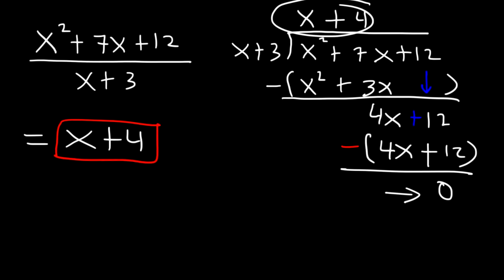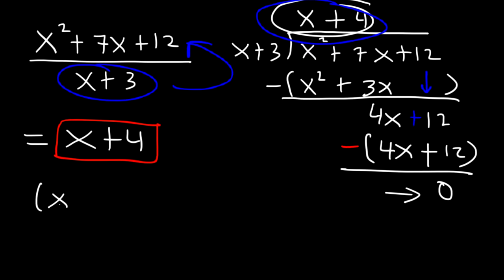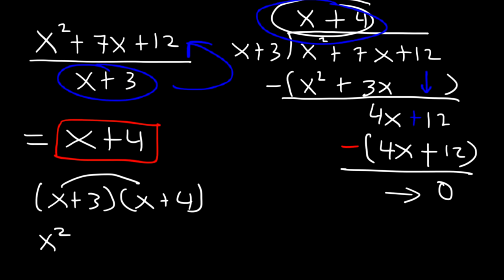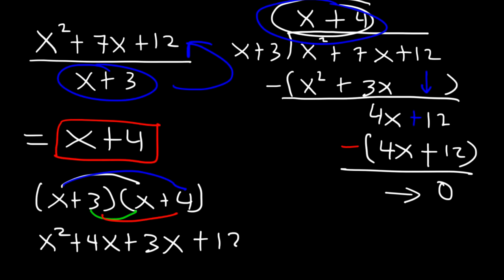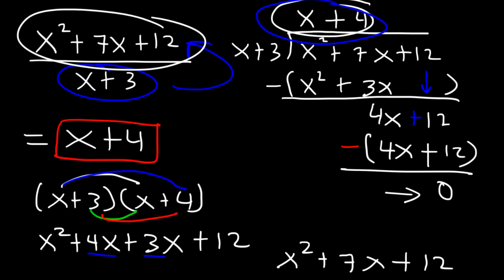To check the answer, multiply x plus 4 by x plus 3 — it should give you x squared plus 7x plus 12. So: x times x is x squared, x times 3 is 3x, 4 times x is 4x, and 3 times 4 is 12. Combine the like terms in the middle: 4x plus 3x is 7x. This gives us what we started with, so this is the correct answer.